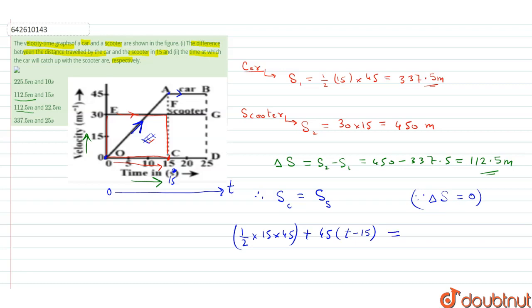the scooter's displacement. The scooter travels with 30 meters per second uniform velocity for time t. So the product will give the displacement of the scooter.